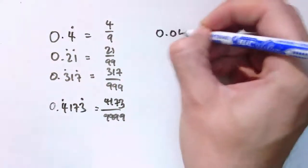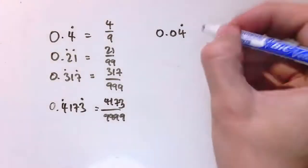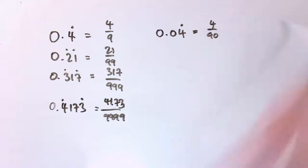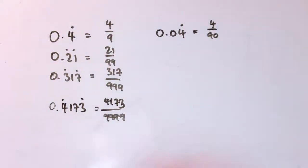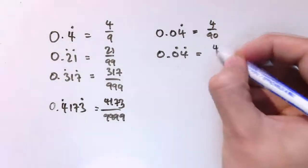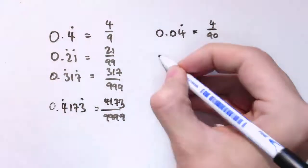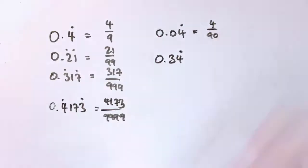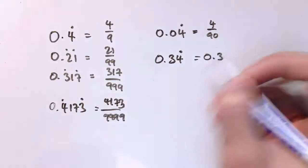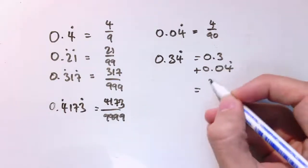0.4173 recurring would be 4173 over 9999. This gives us another way of working out those more complicated ones quickly. So if I wanted to do, say, 0.04 recurring, that would be just this number divided by 10, so that would be 4 over 90. Notice that's different from 0.04 recurring, which would be 4 over 99.